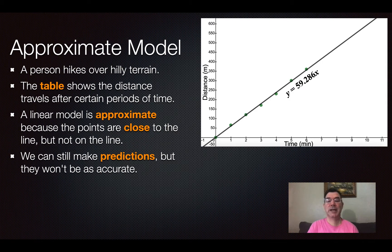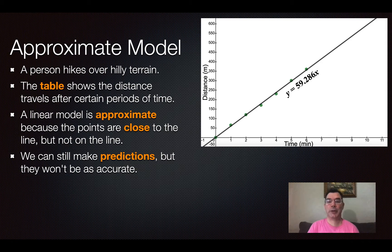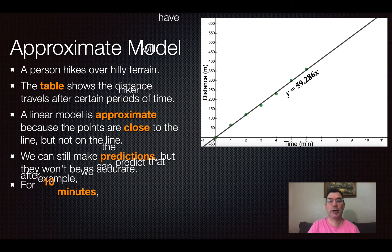But because they are closer to being linearly related than any other kind of relationship like a parabola or a hyperbola or something like that, then we can still make predictions. We can say that they are somewhat linearly related. It's an approximation, but we can still make predictions. They just won't be as accurate as they were in the water example.